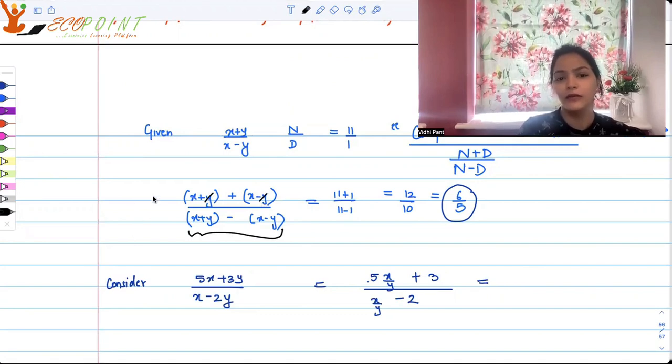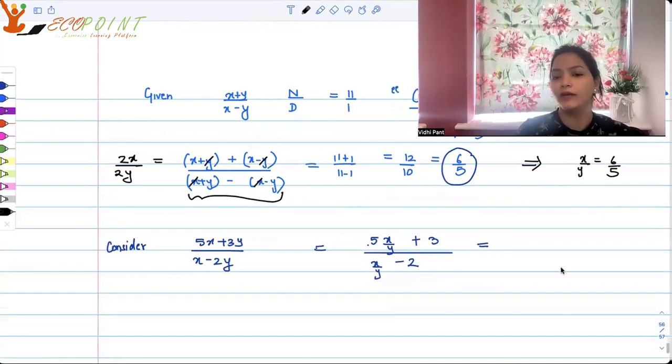y cancels. So you get 2x. Now here x cancels and you get 2y. So that means what you basically have is that x upon y, this entire thing implies x upon y is 6 by 5. So wherever you have x by y, you will write down 6 by 5 and get the result.